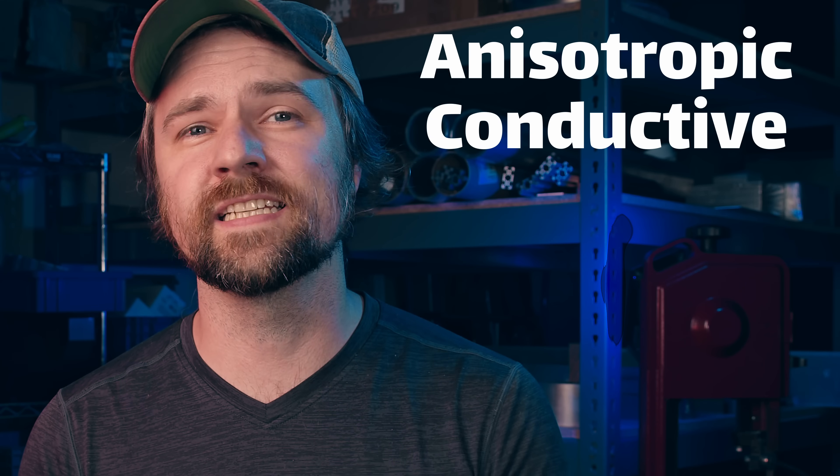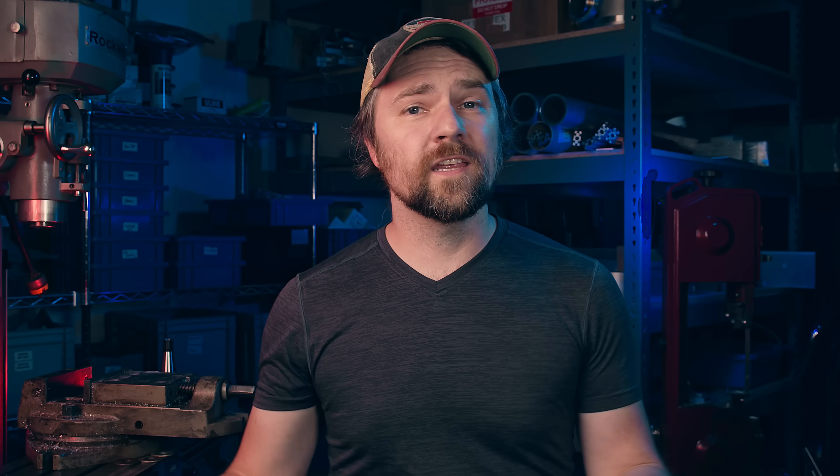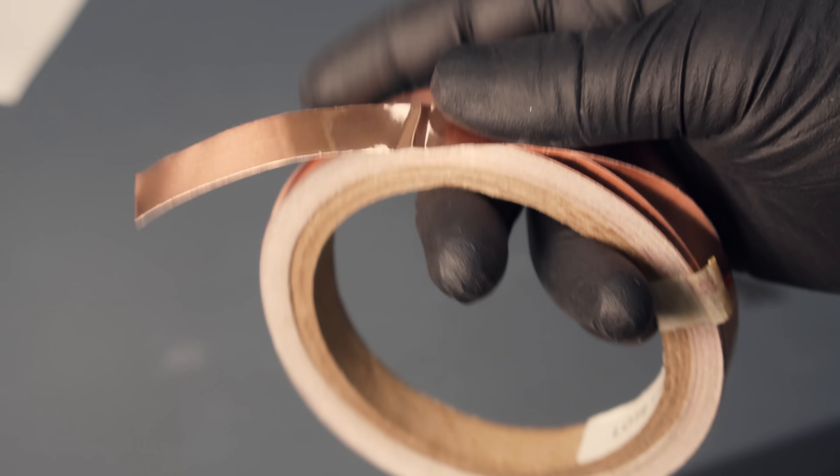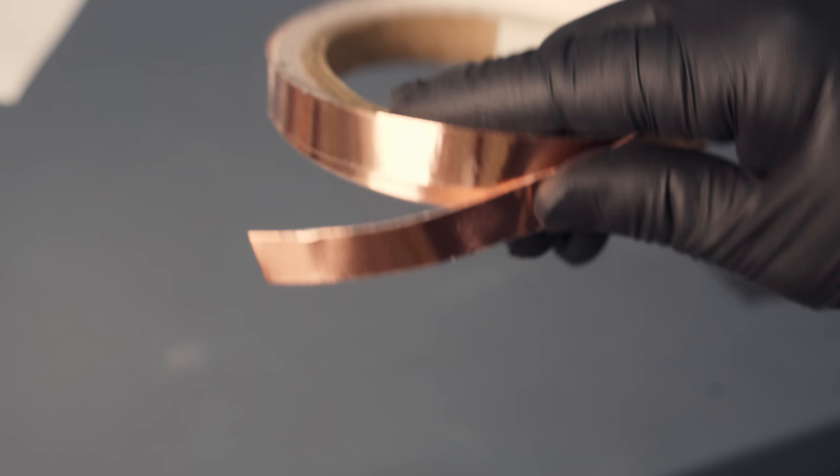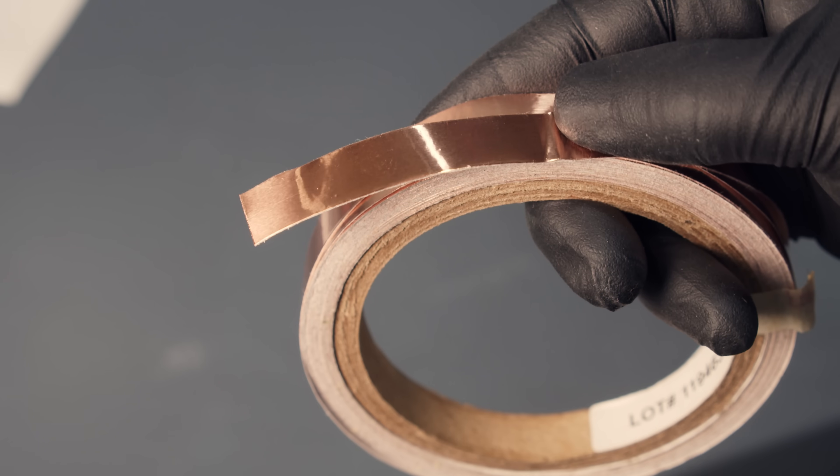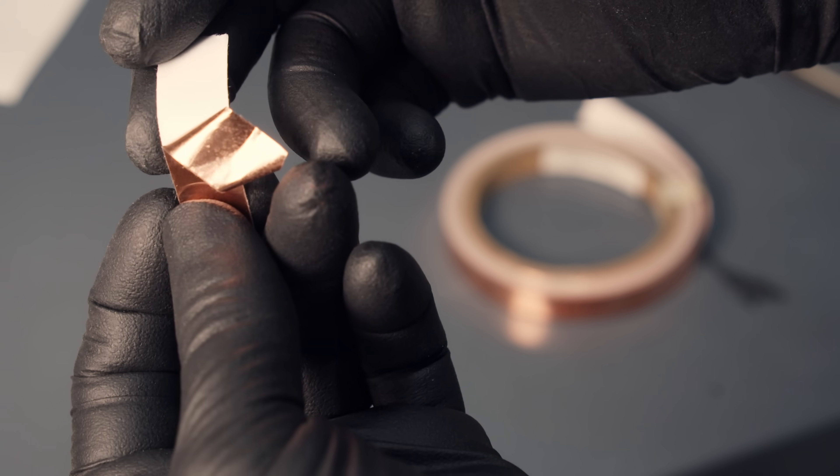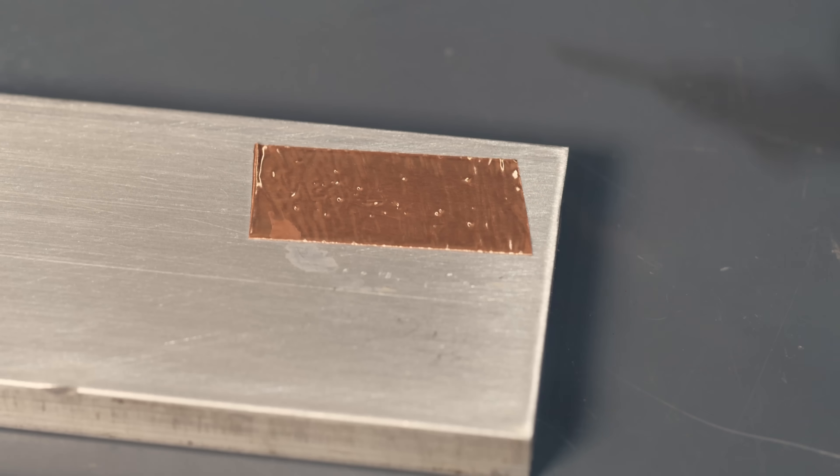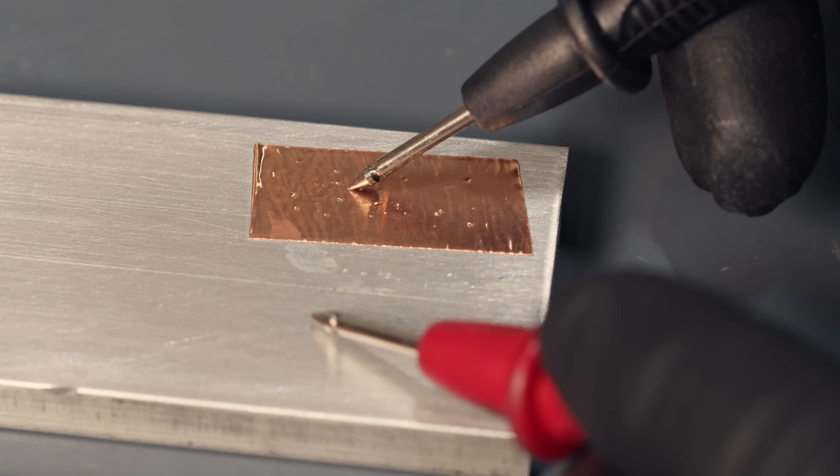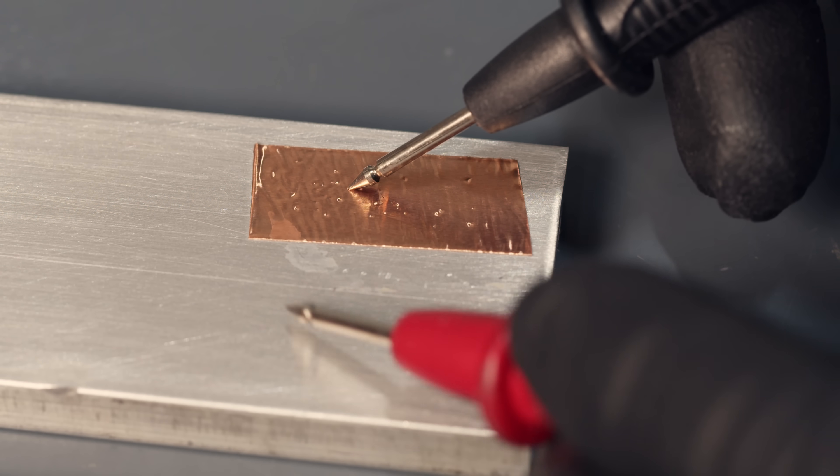So the solution is to use conductive tape. But not just any tape, we need anisotropic conducting tape or film. Regular conductive tape is nothing special. This is a roll of copper conductive tape, and it's basically a thin sheet of copper with a conductive adhesive applied underneath. You can touch anywhere on the copper and it will conduct to the underlying surface, in this case a piece of metal.